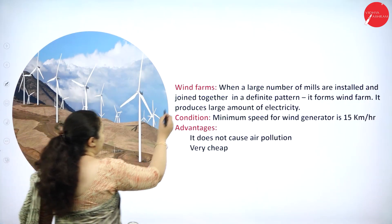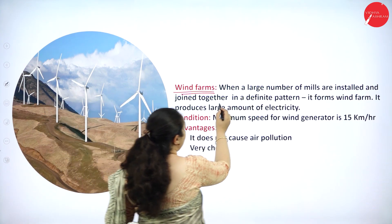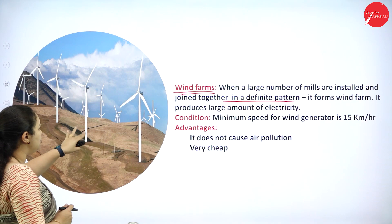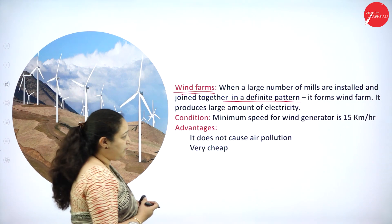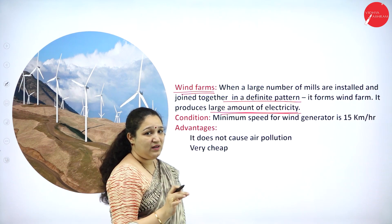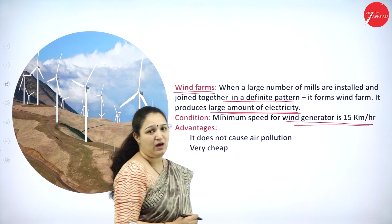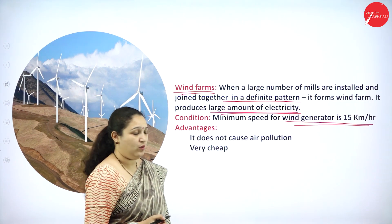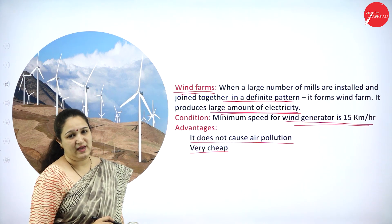When a large number of windmills are installed and joined together in a definite pattern, it forms a wind farm, which produces a large amount of electricity. The minimum wind speed required for generation is 15 kilometres per hour. Advantages: wind farms do not cause any air pollution and are very cheap to install.